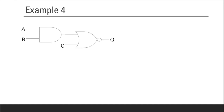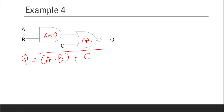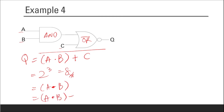Example 4: the expression is Q equals A dot B plus C (NOT). The AND gate gives A dot B as operation one; operation two is A dot B plus C (NOT). With three inputs, there are 8 possible combinations. The table columns are A, B, C, then A dot B, then A dot B plus C (NOT).